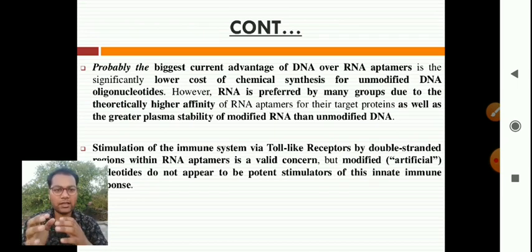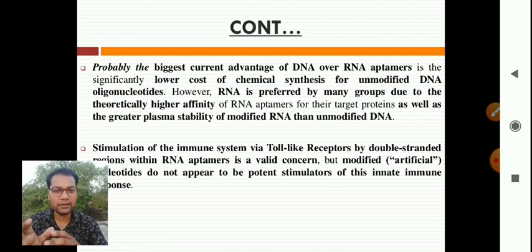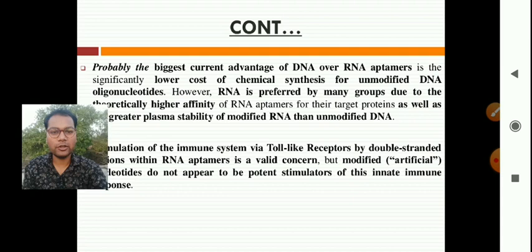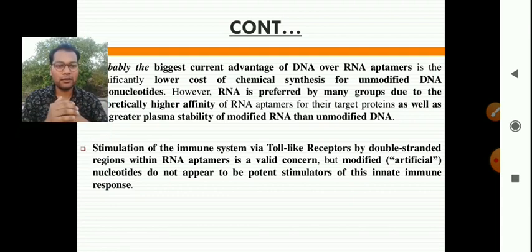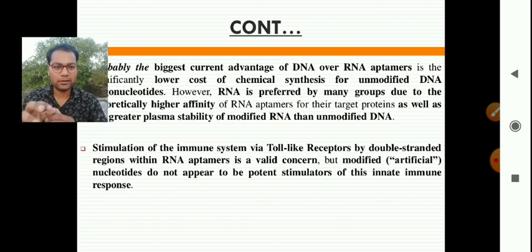Probably the biggest current advantage of DNA over RNA aptamers is the significantly lower cost of chemical synthesis for unmodified DNA oligonucleotides. However, RNA is preferred by many groups due to theoretically higher affinity of RNA aptamers for their target proteins as well as the greater plasma stability of modified RNA than unmodified DNA. Stimulation of the immune system via toll-like receptors by double-stranded regions within RNA aptamers is a valid concern, but modified or artificial nucleotides do not appear to be potent stimulators of this innate immune response.